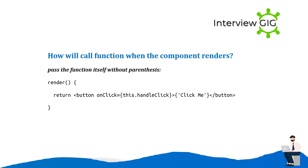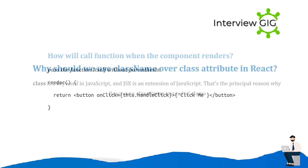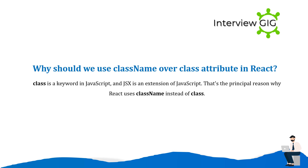How will you call a function when the component renders? Pass the function itself without parentheses in the render method. Also, class is a keyword in JavaScript and JSX is an extension of JavaScript — that's the principal reason why React uses className instead of class.